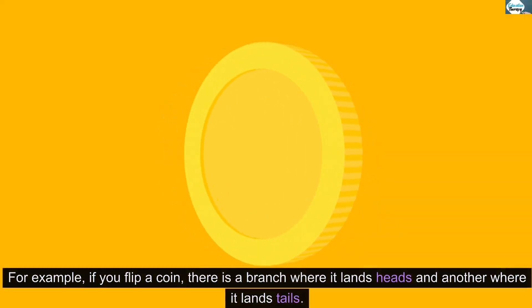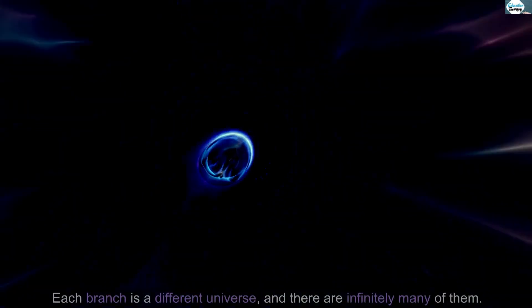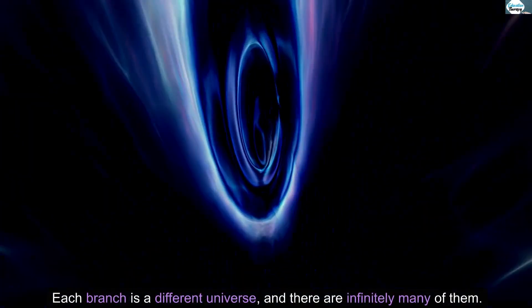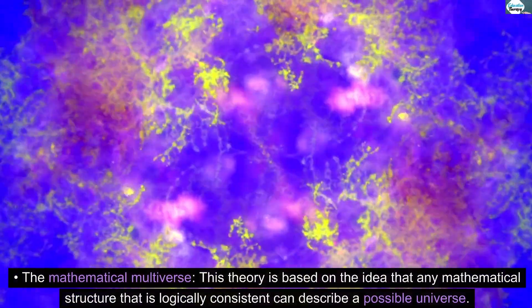For example, if you flip a coin, there is a branch where it lands heads and another where it lands tails. Each branch is a different universe, and there are infinitely many of them.